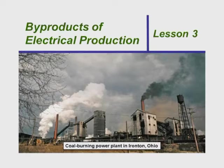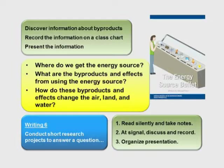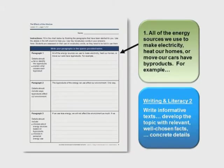They look at byproducts of electrical production and make large charts where each group comes up to present their information and talk about benefits and drawbacks. There are sentence frames so they can write using evidence, using examples, chosen facts, and concrete details — all connected to Common Core.